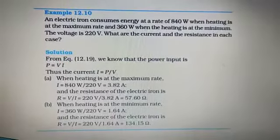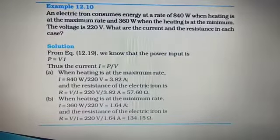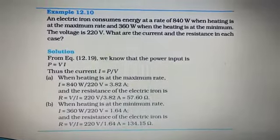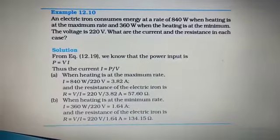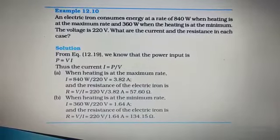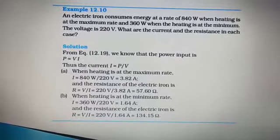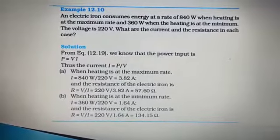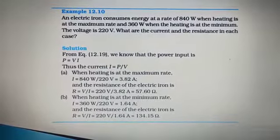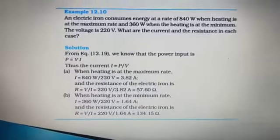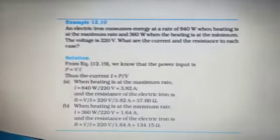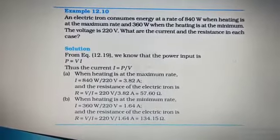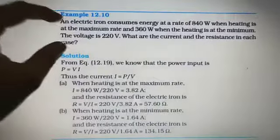An electric iron consumes energy at a rate of 840 watts when heating is at the maximum rate and 360 watts when the heating is at the minimum. The voltage is 220 volts. What are the current and the resistance in each case? As I have already told you, first thing that you need to do while reading a question is identify the given information from the question.